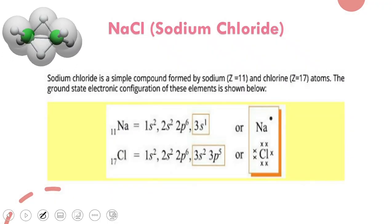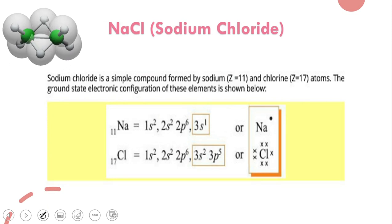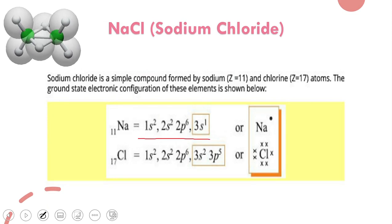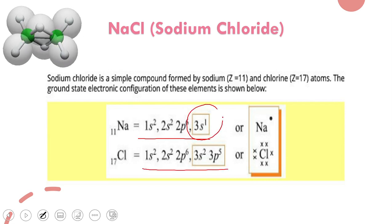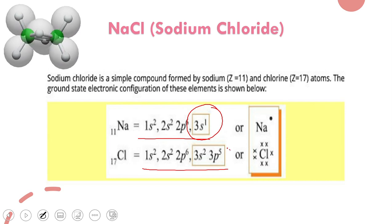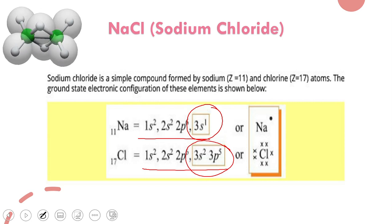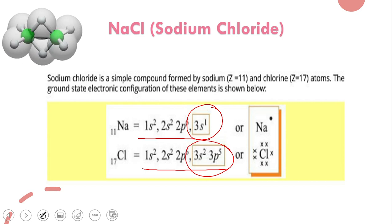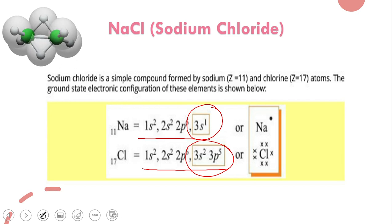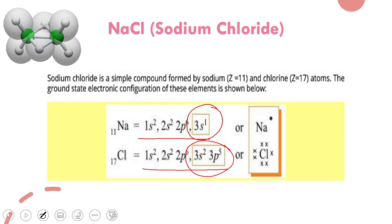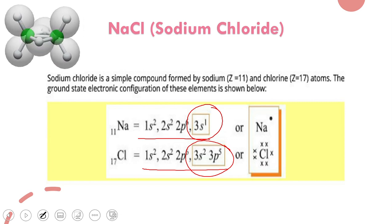We have sodium with atomic number 11, and chlorine with atomic number 17. If we look at sodium's electronic configuration, its third shell has just one electron. Chlorine has seven electrons in its last shell. As discussed in the previous lecture, atoms try to lose, gain, or share electrons to achieve noble gas configuration. Sodium has only one electron in its last shell, so it will lose that one electron.